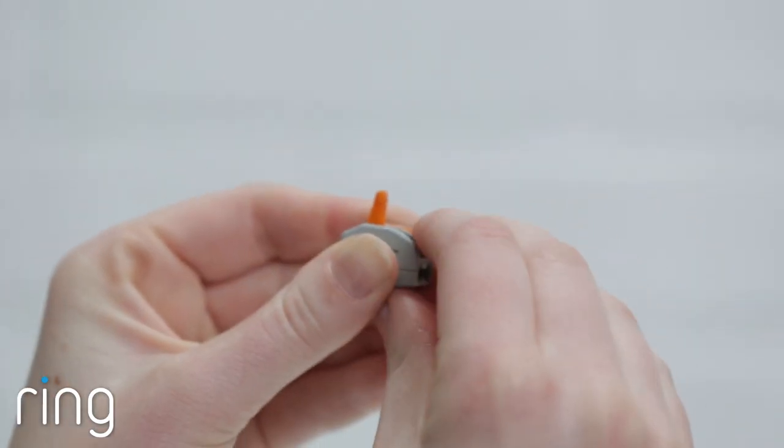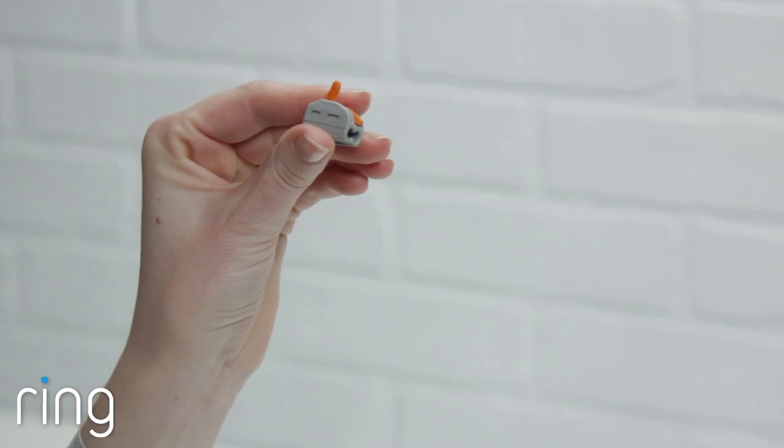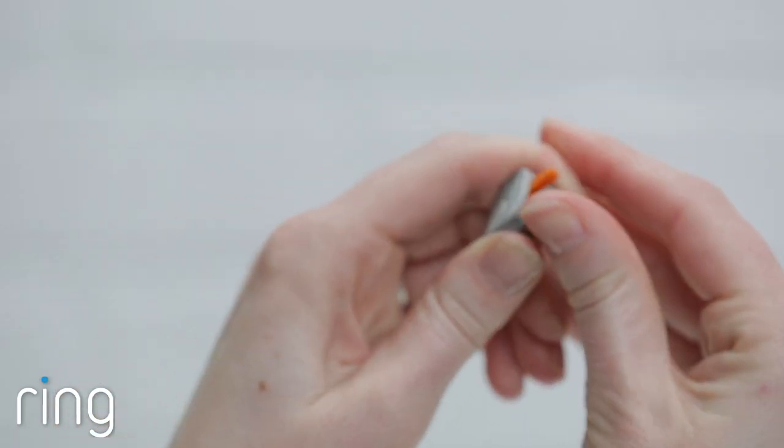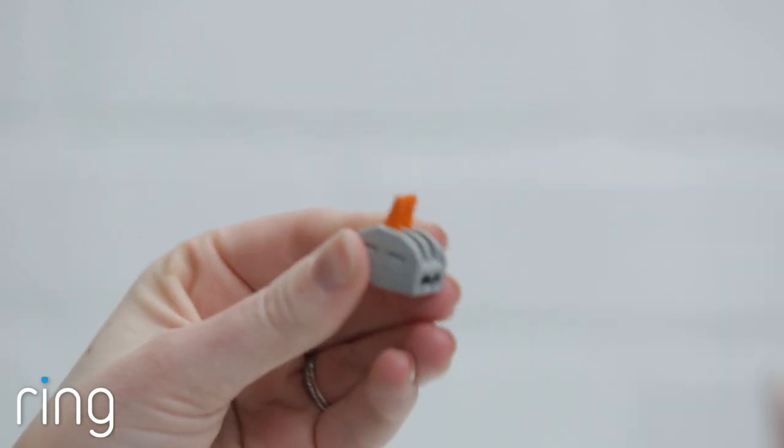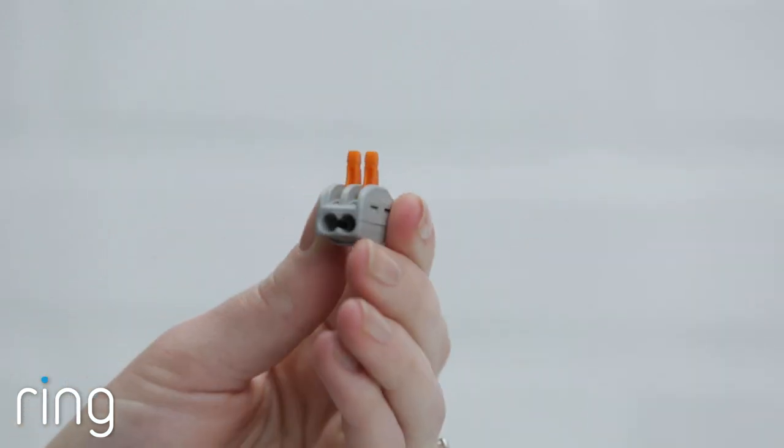To open the wire clip, lift the orange levers all the way up. Yes, you will feel like you're going to break them. The connector is open when the orange lever is at a 90 degree angle.